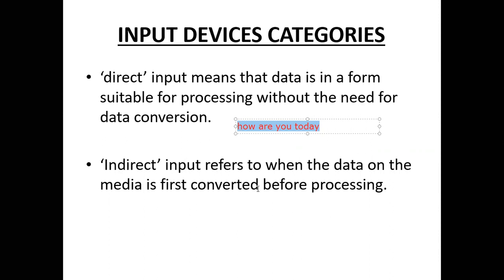There are other input devices which capture data in a form that is already ready for processing — no conversion step is needed. For example, data already stored on some storage media such as a flash drive, a CD, a memory stick, or a memory card is already in digital form. When we have such data, this process of conversion is not needed, and that is referred to as direct input.